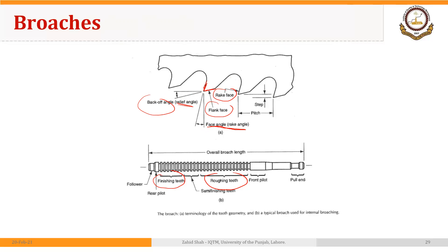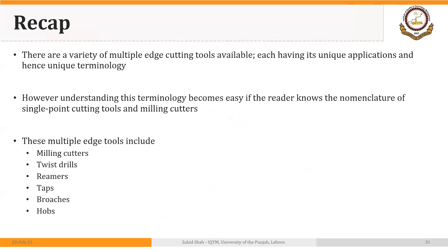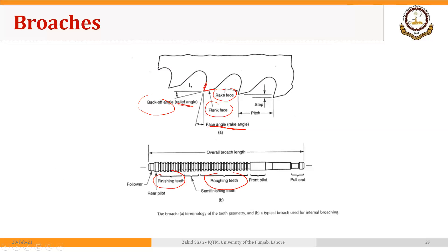Another operation used to make gears is machining on a milling machine, but that is a very slow process. If you have to make a gear to replace a broken or worn-out gear, then milling can be an option. You could watch the video in the description to see these gear-making operations in action. Thank you.